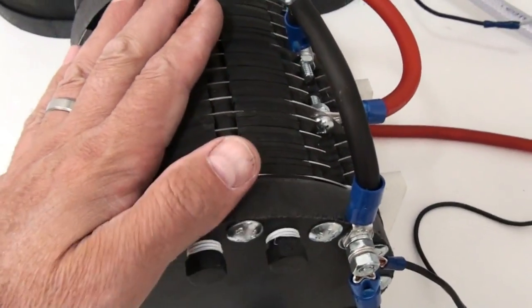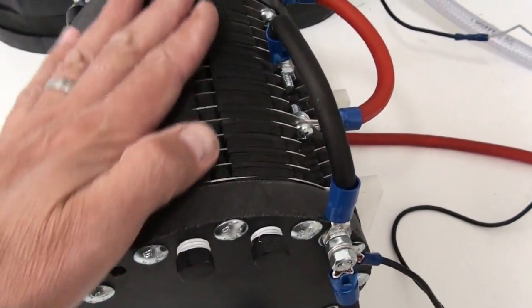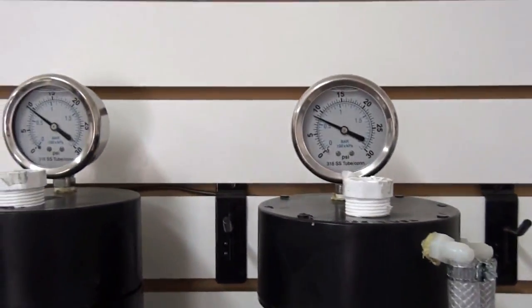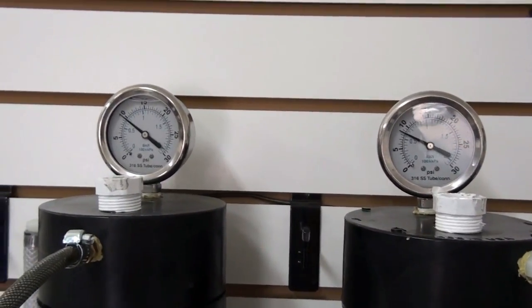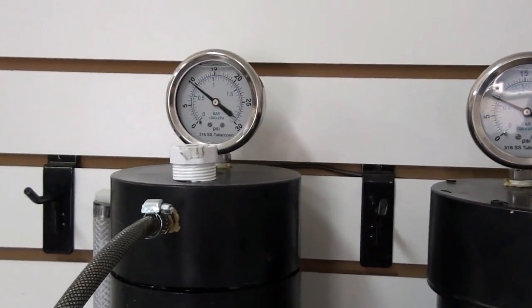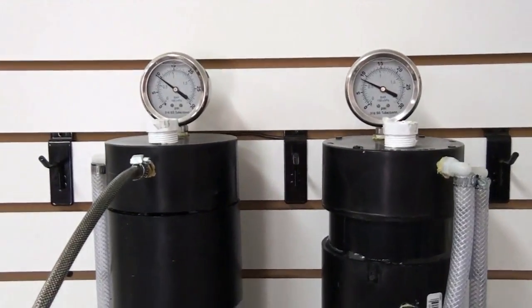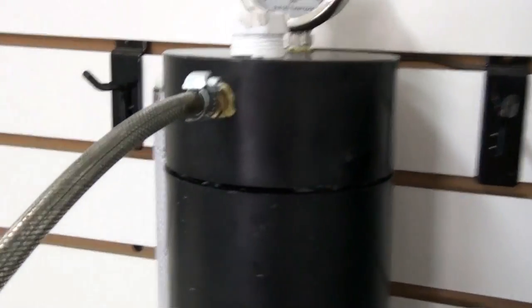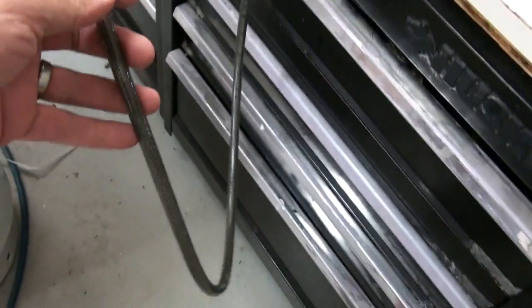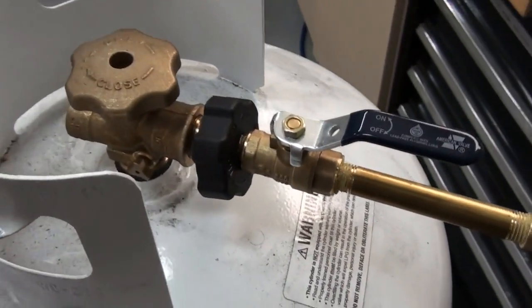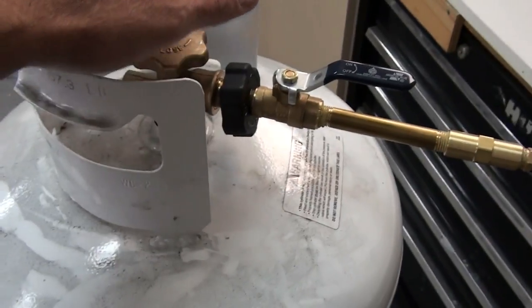So what we're doing right now is compressing the hydrogen. You can see we've got about 10 psi. Right now I've got the hydrogen coming off the tank here, it comes down this hose and up to this 100-gallon propane tank. What we're going to do is compress the hydrogen in this tank up to 25 psi.